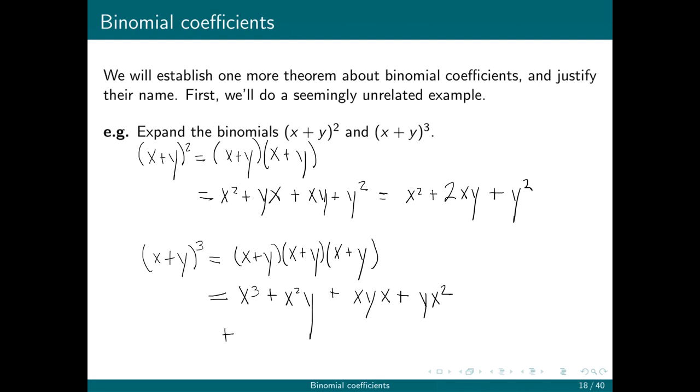I could also have done x, y, y, which would give me the term x y squared. I could have also done y, x, y, and I could have also done y squared x. And then finally, I also get the term where I multiply all three y's together, and that gives me y cubed.